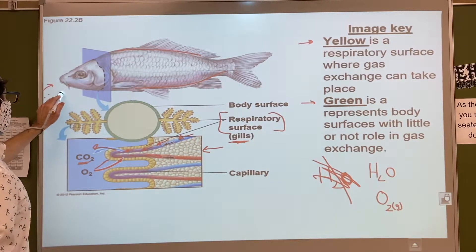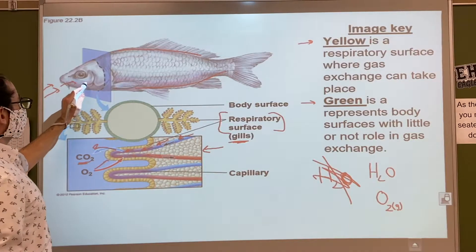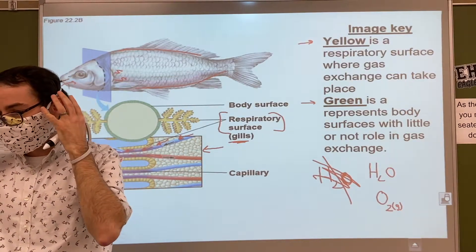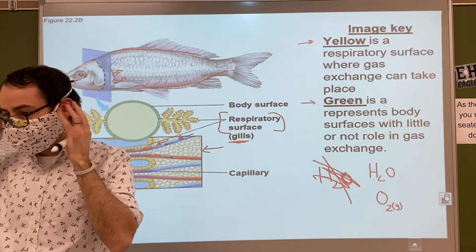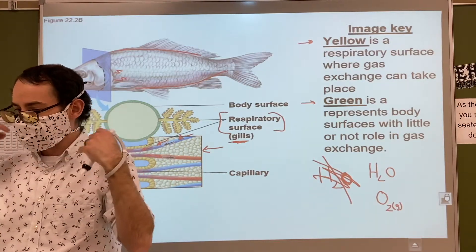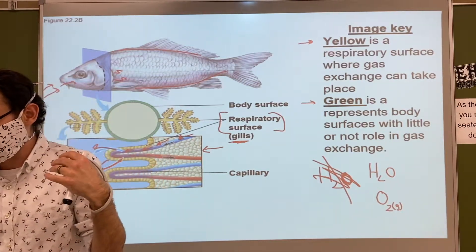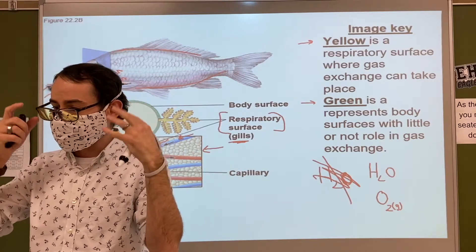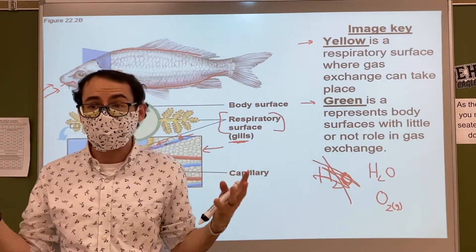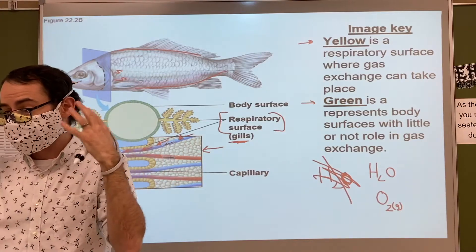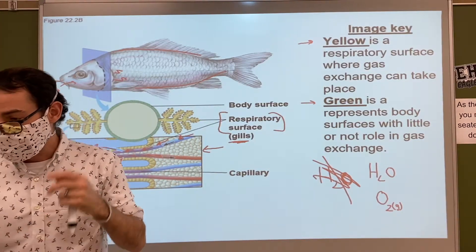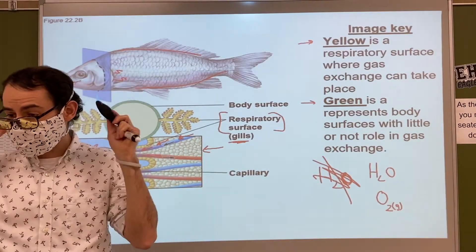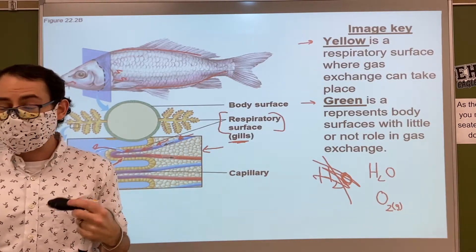The fish opens its mouth, water goes in, and then it comes out through the gills. If you've ever seen a goldfish doing the little gill flap thing, what it's doing is getting new water near the gills because new water will have more oxygen. If it didn't do the gill flap, it would breathe up all the oxygen in that area and could suffocate if it didn't move around.